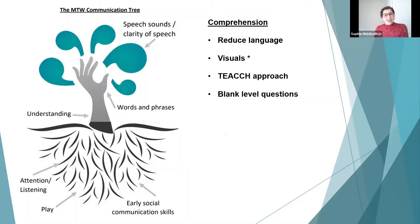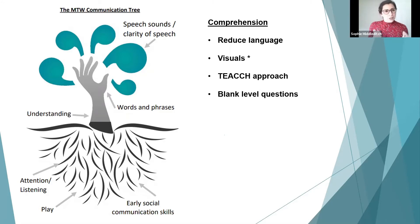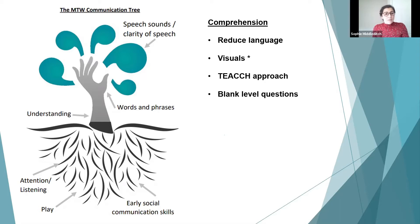Another area of understanding is Blank Level Questions, developed by Dr. Blank. These structure language according to levels of understanding from one to four, with four being most difficult. Children or adults with autism often struggle with Blank Levels 3 and 4. Blank Level 1 is naming — 'What's this?', 'What do you hear?' Non-verbal children can still respond by pointing. Blank Level 2 is describing — 'What happened?', 'What size is it?', 'What colour?' — and non-verbal children can demonstrate this through PECS attributes too.